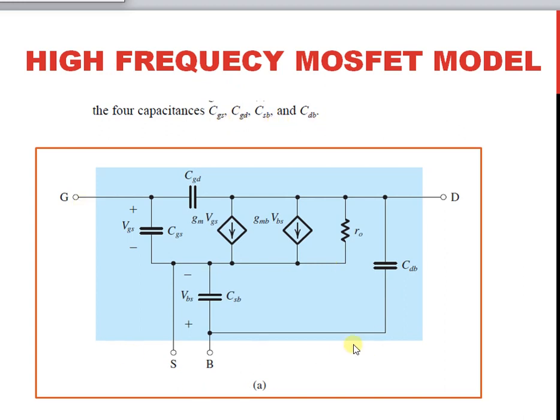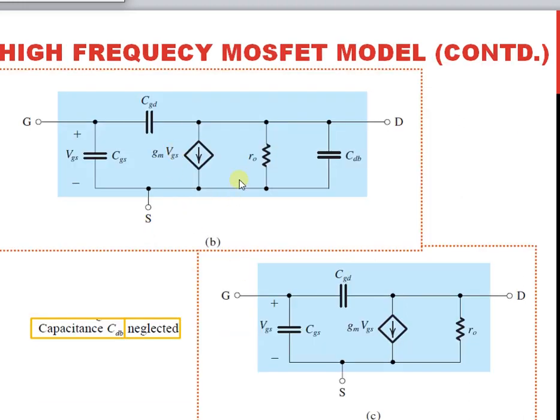This model, shown in figure A, predicts the high frequency response of the MOSFET amplifier. When the source is connected to the body, the model can be simplified, which will be shown in the next figure B. In this model, the capacitance CGD between the gate and drain is very small and determines the high frequency response of the amplifier.